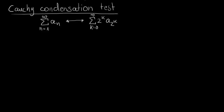First of all, let's have a look at what I sometimes call the Cauchy condensation test. What it tells you is: if you have a sum and you want to find out if it is converging, then look at this sum instead. The difference is that now in front you have 2 to the K, so the indices change, and instead of a_n you take a_{2^k} — you only look at terms at powers of 2.